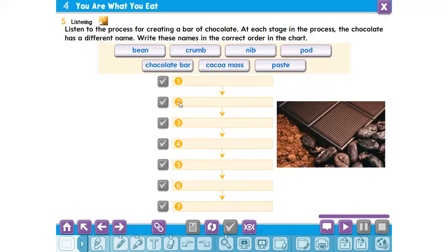The first step is pod. Number two is bean. Number three is nib. Number four is cocoa mass. Number five is crumb. Number six is paste. The last one is chocolate bar.